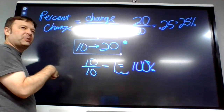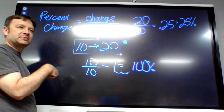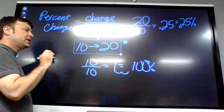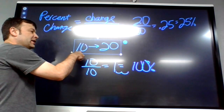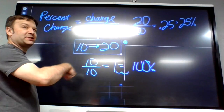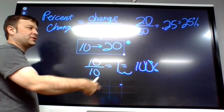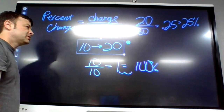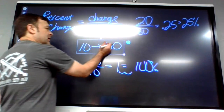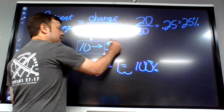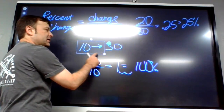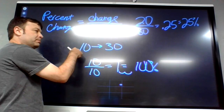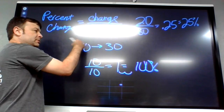What if it decreased by 100 percent? You'd get zero, because you'd get rid of everything. And if it increases by 100 percent, it's basically doubling — increasing by another 10 to get 20. So if you went from 10 to 30, that would actually be a 200 percent increase, because it's going up two of those.